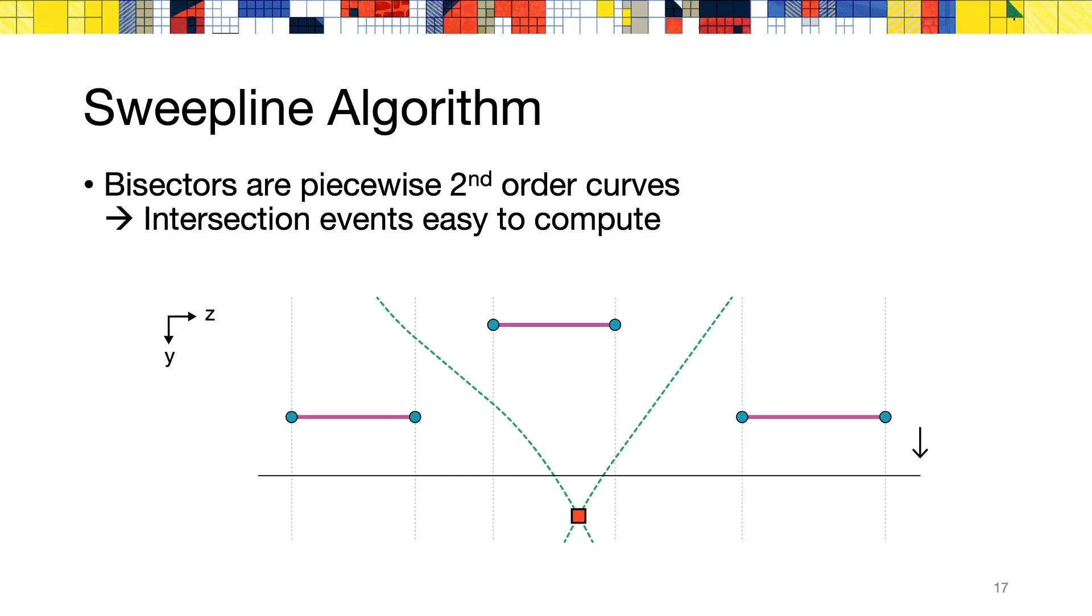And then, when we reach an intersection event, for example the red dot in this picture, then we can remove the central segment from the list of active seed, as the two segments on the left and the right will now be closer to any point on the sweep line. Those intersection events are easy to compute, as they are the intersection of piecewise second order polynomial curves.